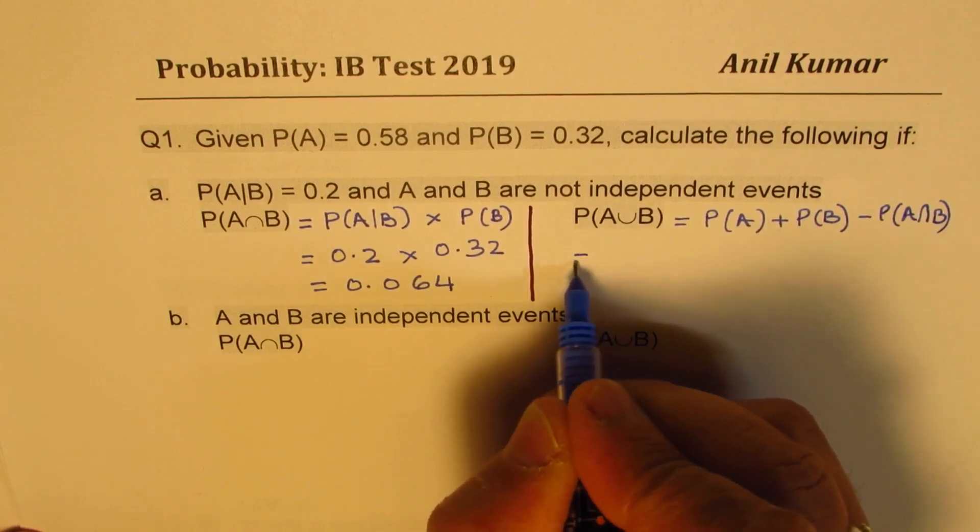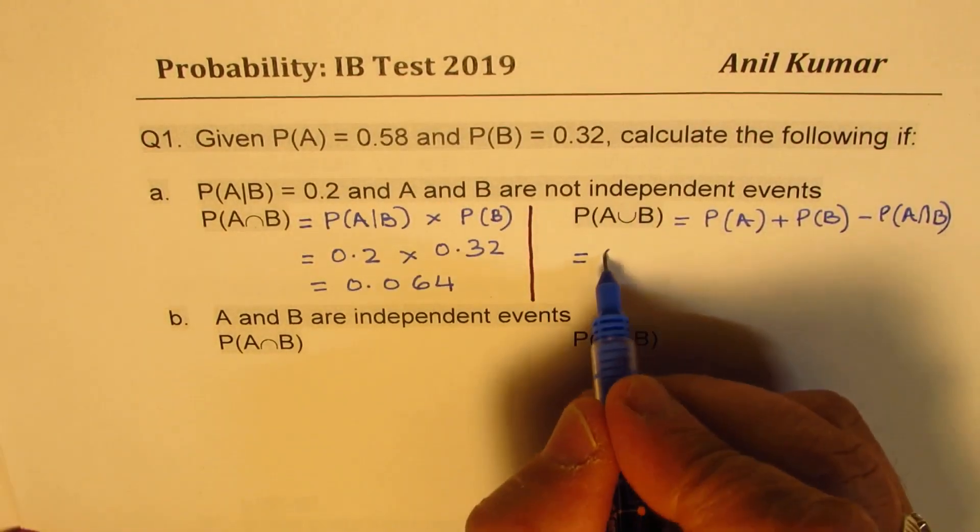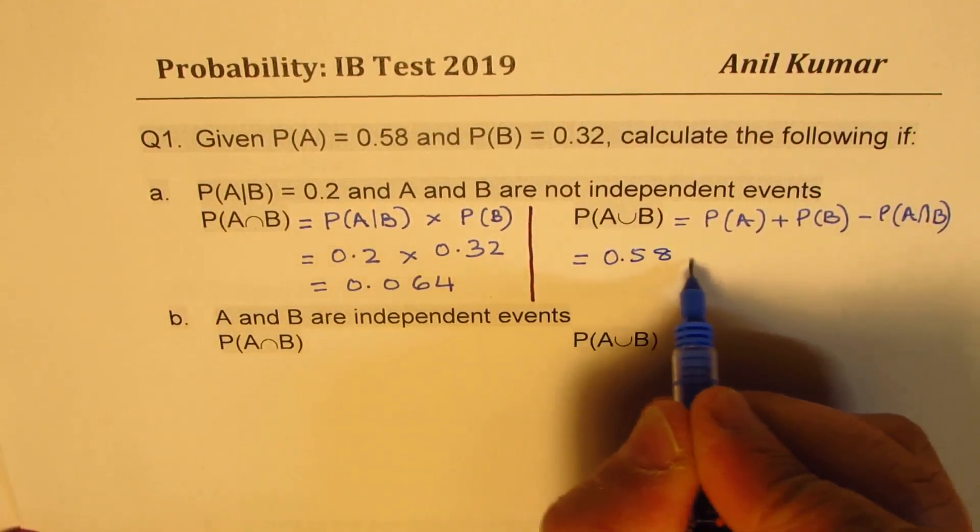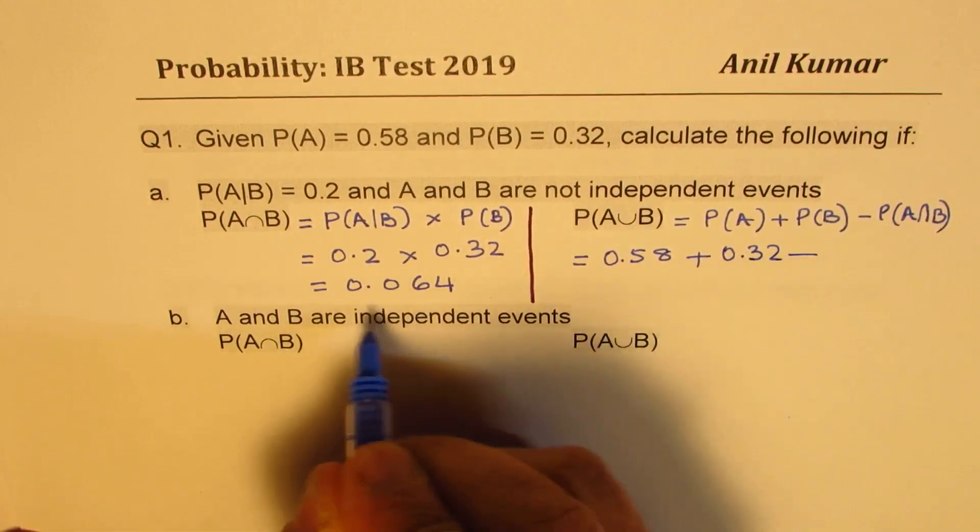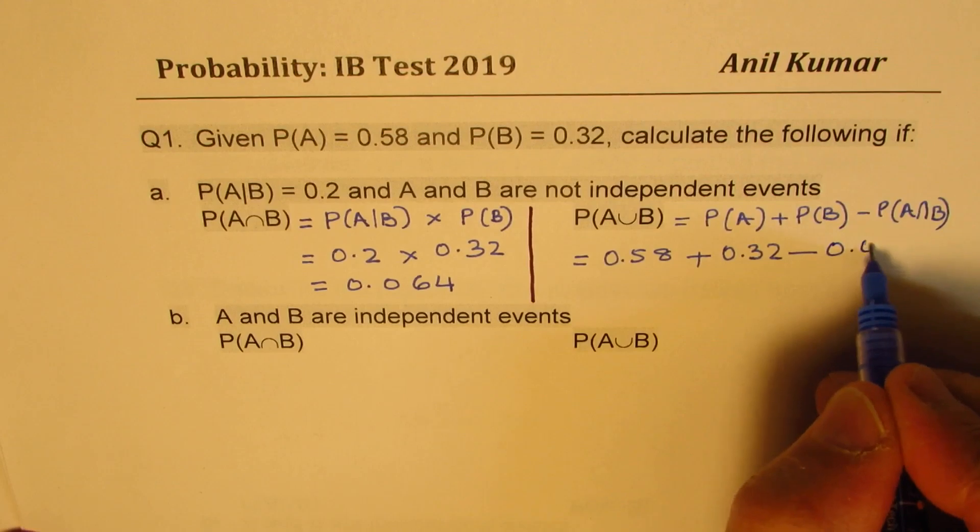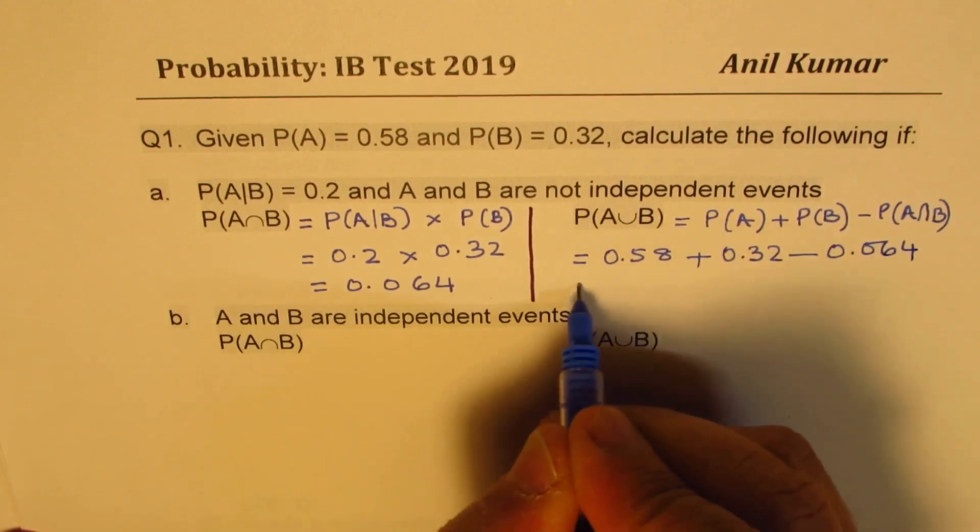Now we are given probability of A. Probability of A is 0.58 plus probability of B is 0.32 and we will take away what we just found, 0.064, to get the answer.